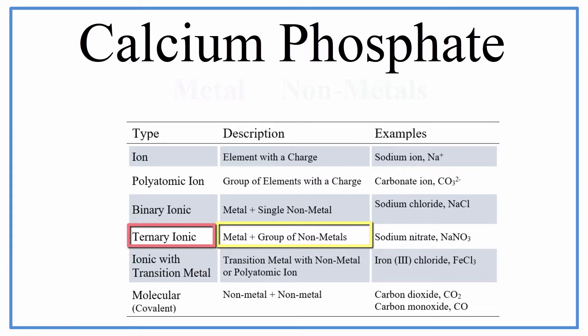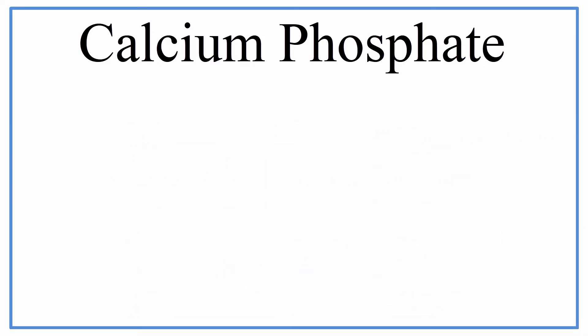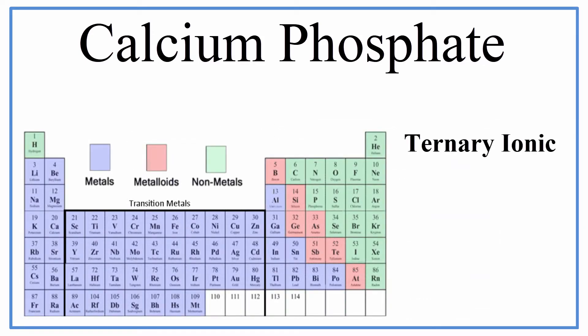For example, sodium nitrate, NaNO3. To write the formula for calcium phosphate, first we'll write the symbol for the metal, calcium, just as it appears on the periodic table. So that would be Ca.